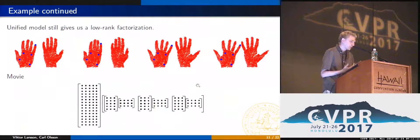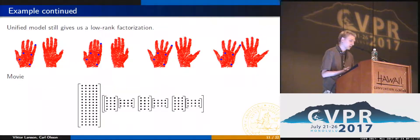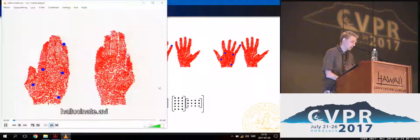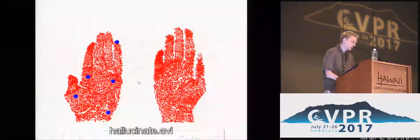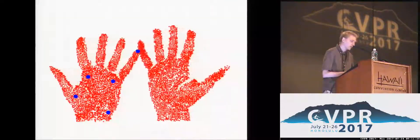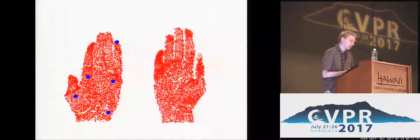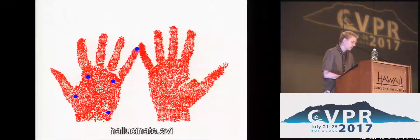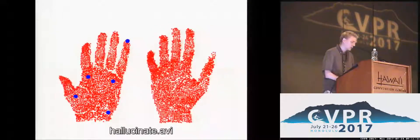This model still gives us a low-rank factorization which we can use for whatever application we need. For example, we can extract the shape basis and hallucinate a new scene — the red points are recovered from the position of just five blue points. What is interesting to note is that the shape basis is still locally low-rank, which you can see in this video.